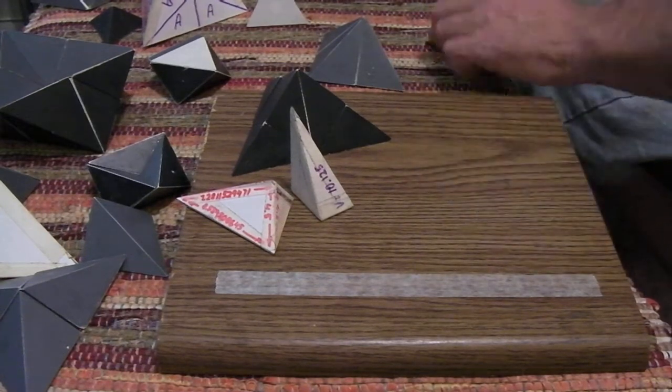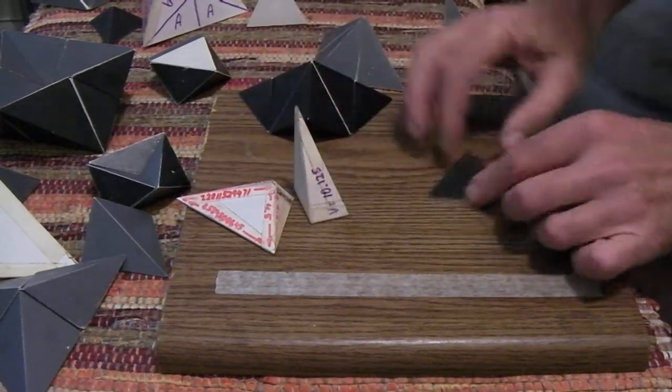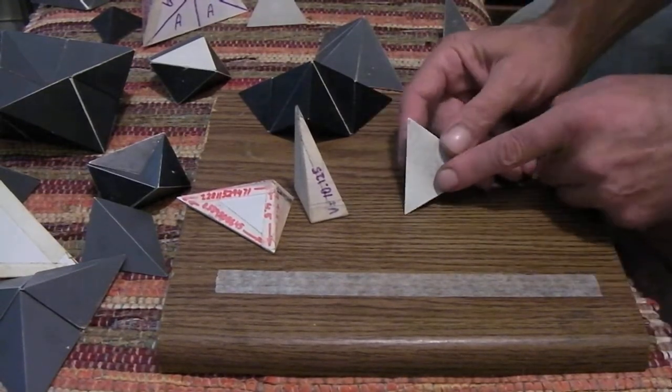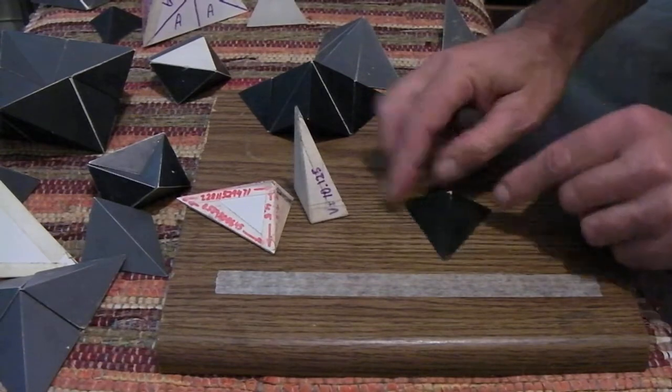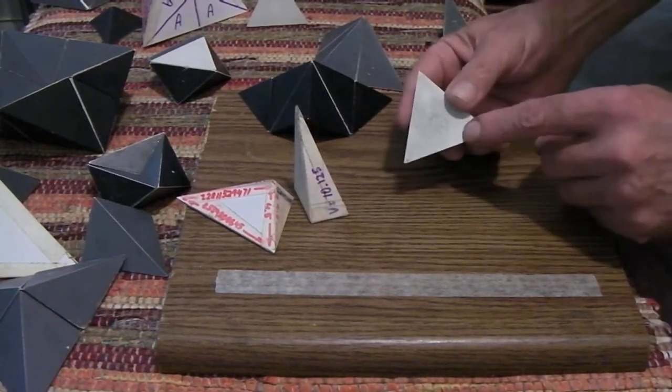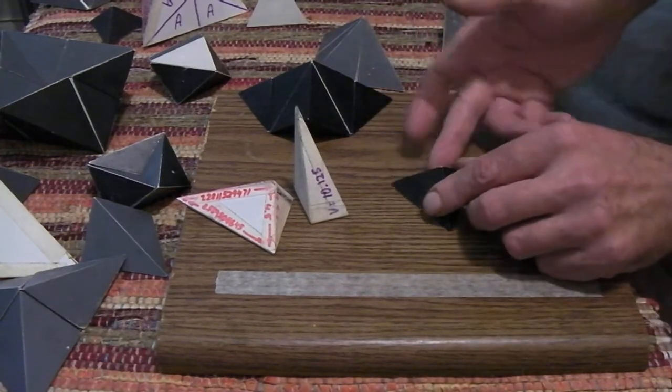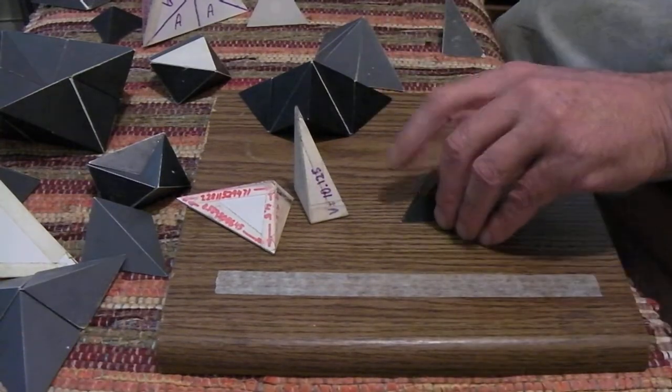Same applies to the octant. This is the octant, has actually three identical faces and one different face. All these are same length and these are different than these, but they are all same. There is only two kinds of surfaces and two kinds of edge lengths.